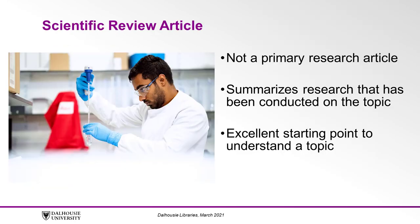A second type of journal article is the scientific review article. The scientific review article is not in itself a primary research article. Rather, it summarizes the research that has been conducted through the years on a specific topic. A scientific review article can be an excellent starting point to understand a topic.